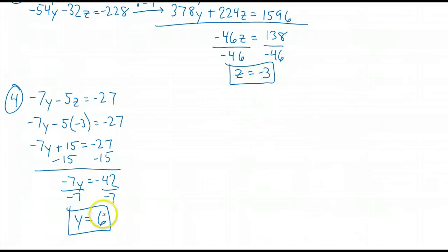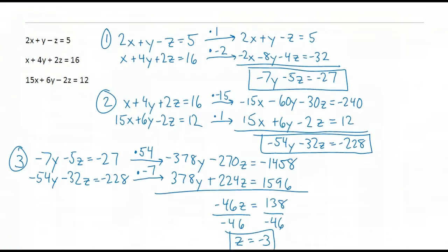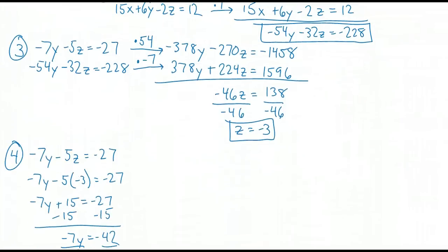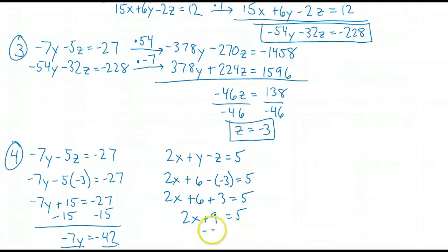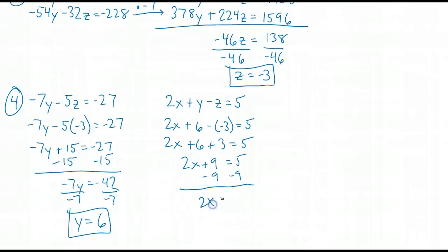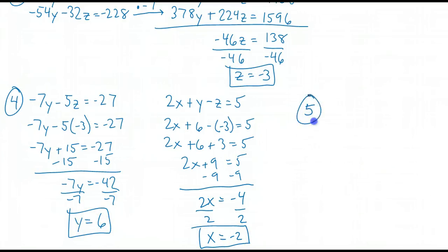I need to figure out x, so I need an equation with x, y, and z. I'll go back to my original equations and borrow the first one. I plug in my y value and my z value and solve for x. Now I've solved for x, y, and z. Step 5: check my answer.